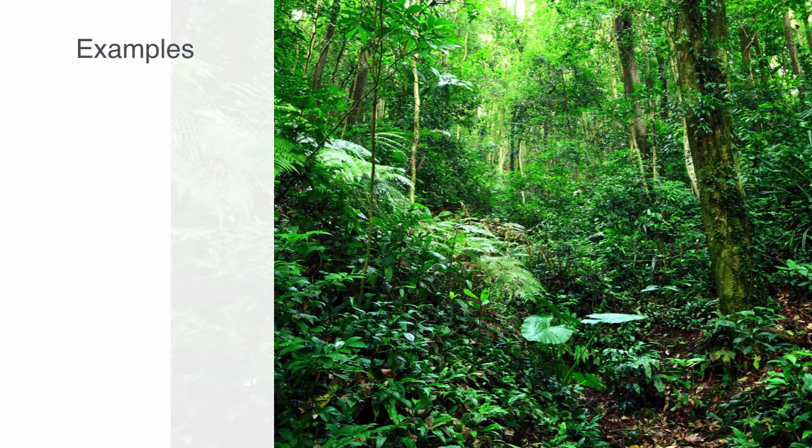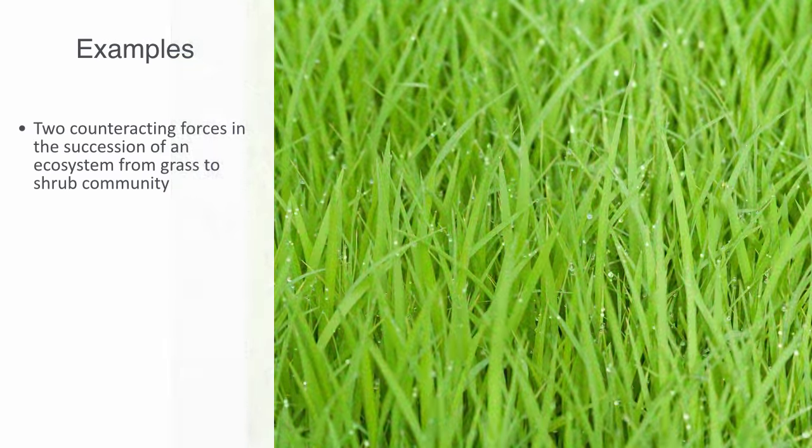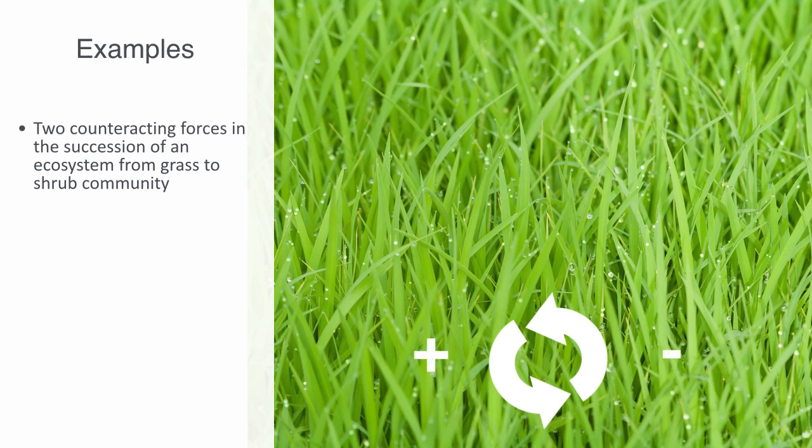As an example of these two counteracting forces, we can look at the succession of an ecosystem from grass to shrub community. Beginning with an ecosystem in which the ground is covered with grasses, shrubs may be present but they are young and scattered. The ecosystem may stay this way for five to ten years or possibly longer because shrub seedlings grow very slowly.